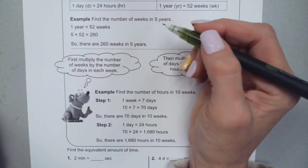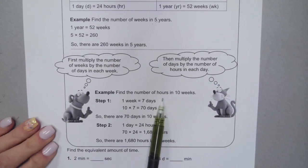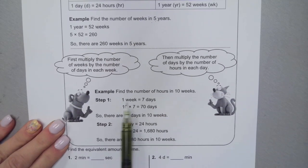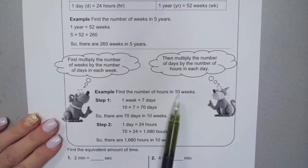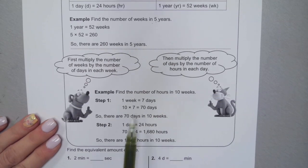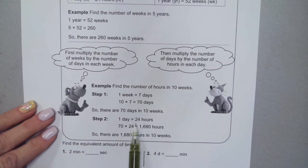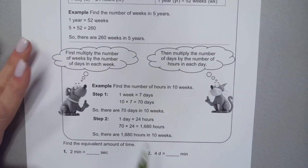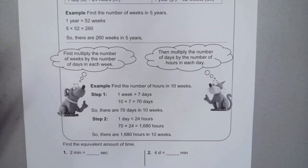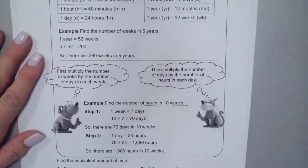If I want to find the number of hours in 10 weeks, first I've got to figure out how many days there are in those weeks. There are seven days in one week, so in 10 weeks there would be 70 days. Because there are 70 days in 10 weeks and I know there are 24 hours in each day, I would then multiply 24 times 70 to get 1,680 hours.